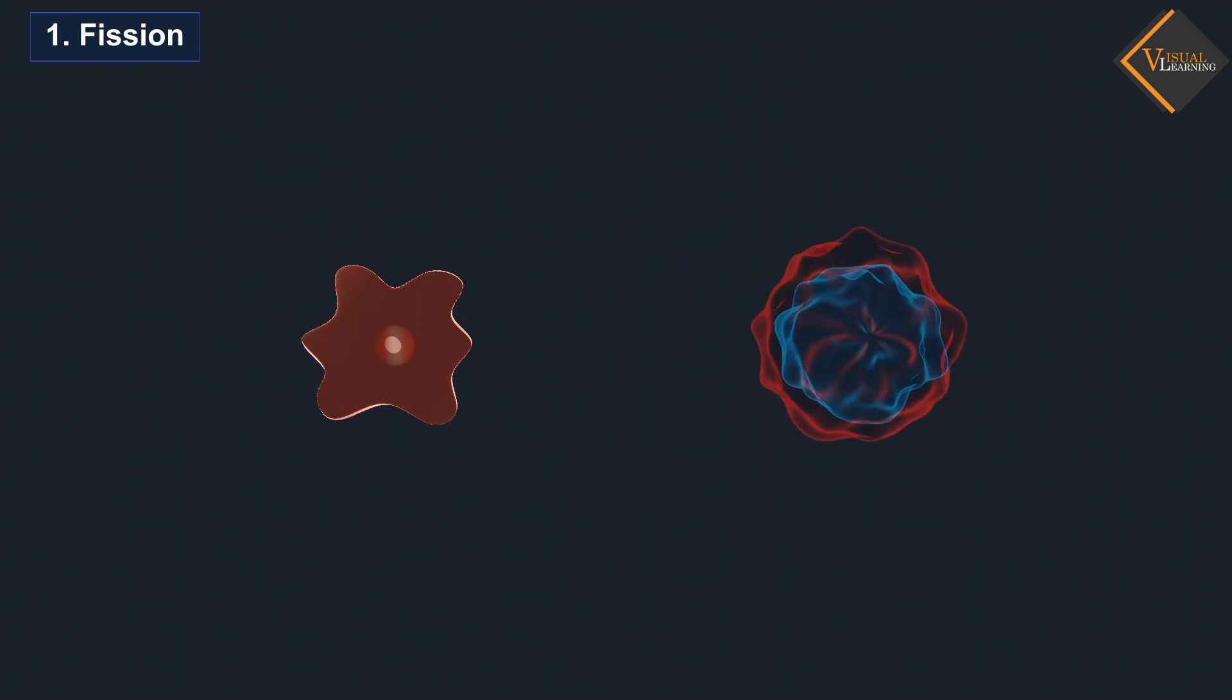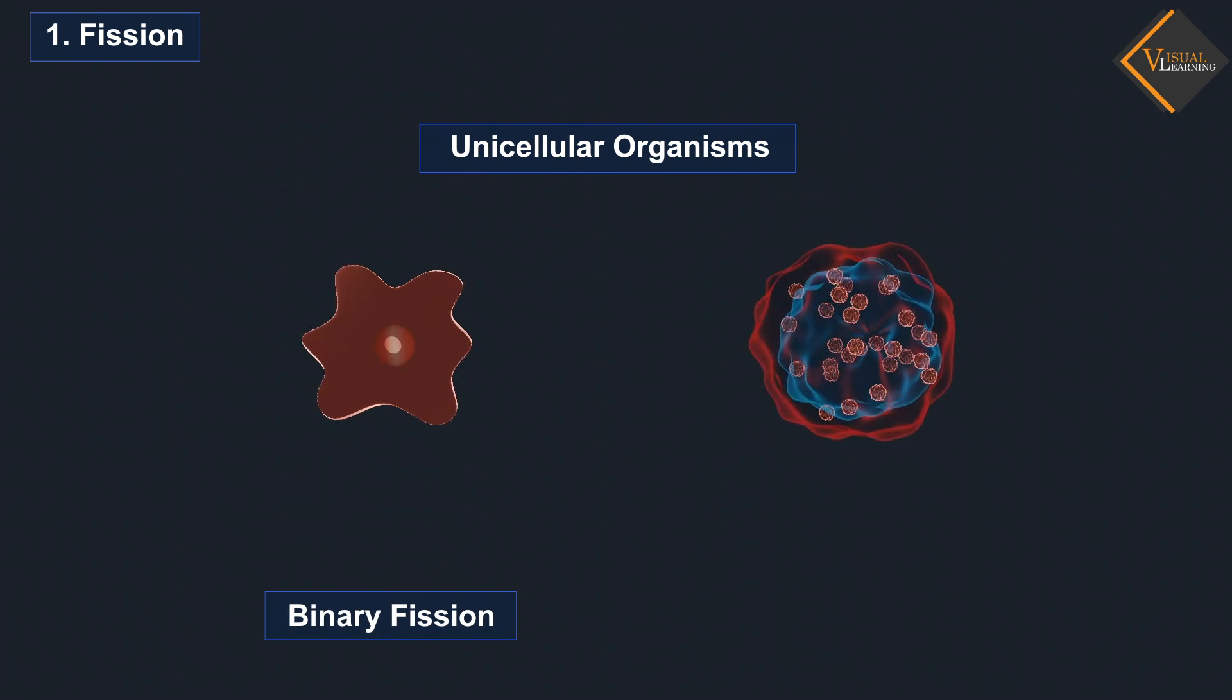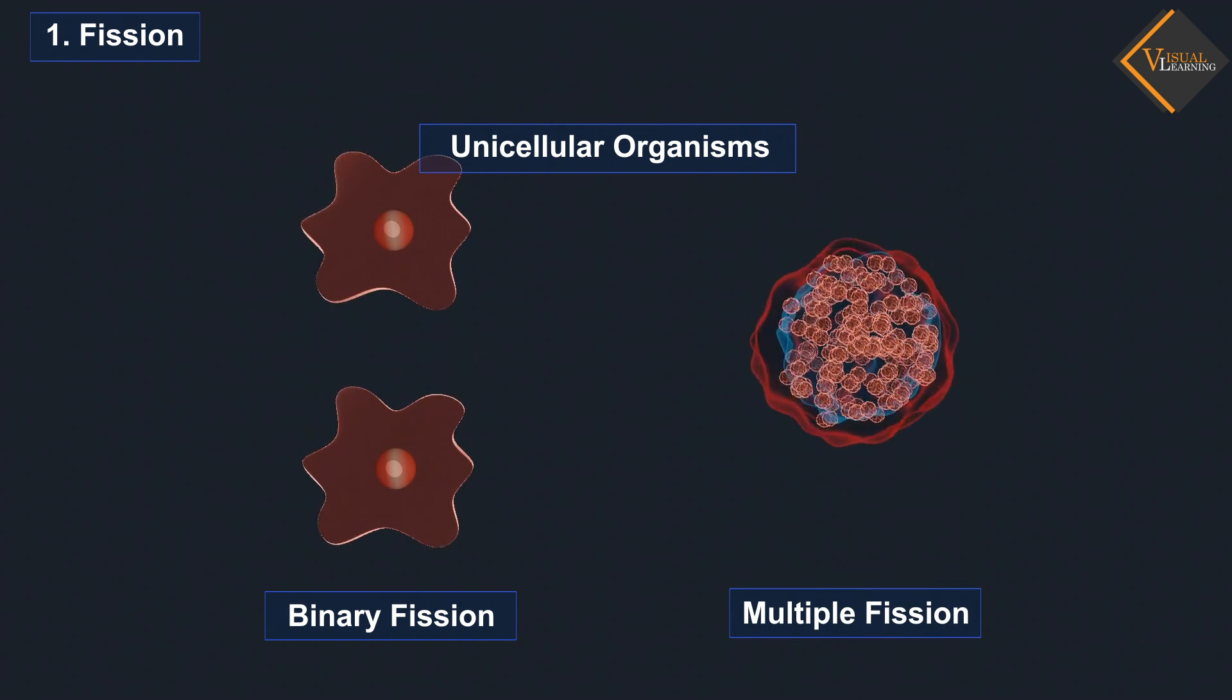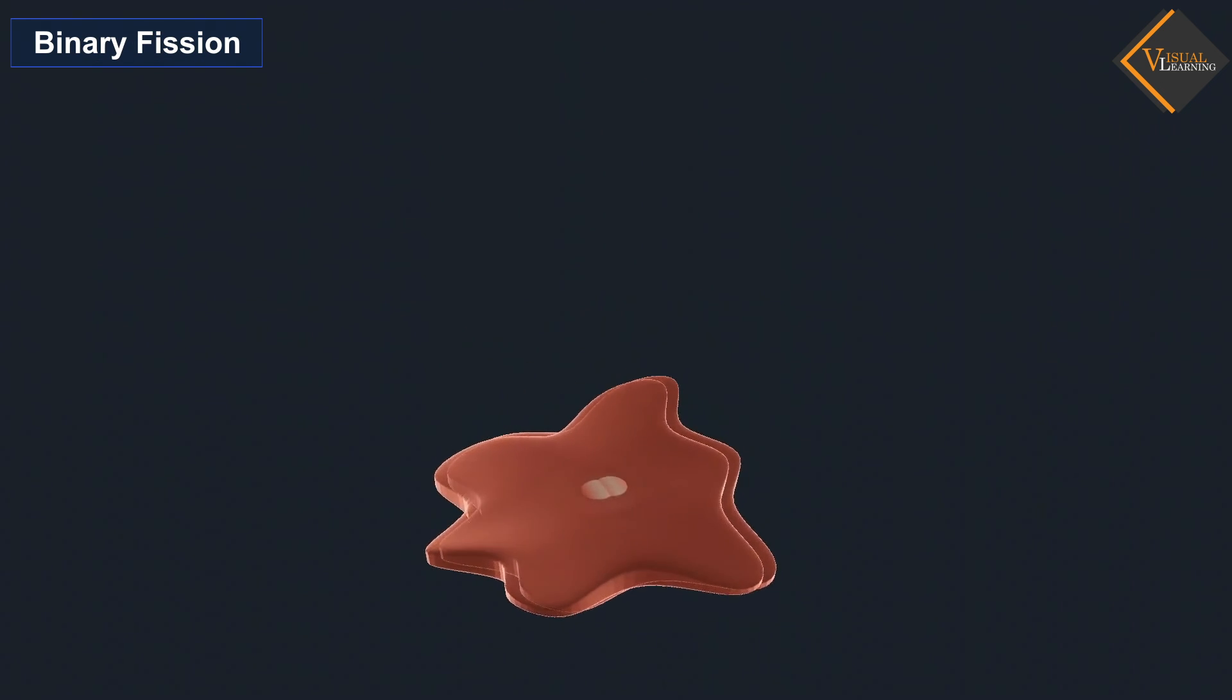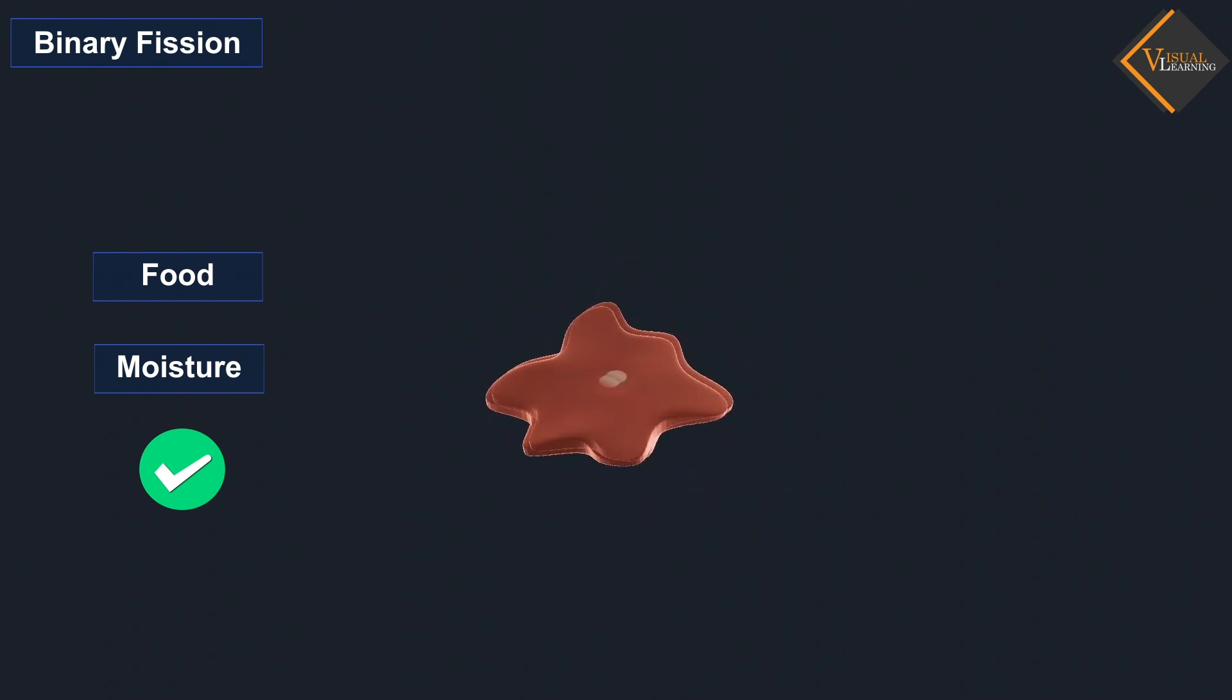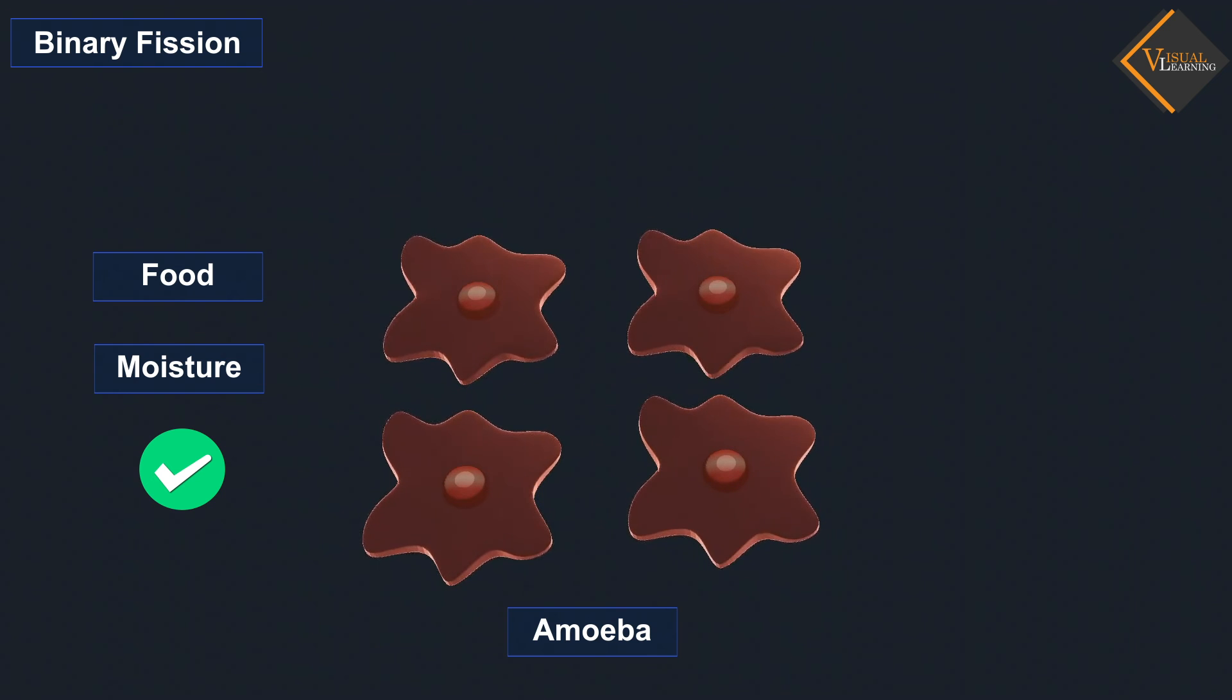Fission: This process takes place in unicellular organisms. It is of two types: binary fission and multiple fission. Binary fission: The organisms reproduce by binary fission only when adequate amounts of food and moisture are available. In this process, the mother cell divides into two daughter cells, each containing a nucleus. For example, amoeba divides by binary fission.